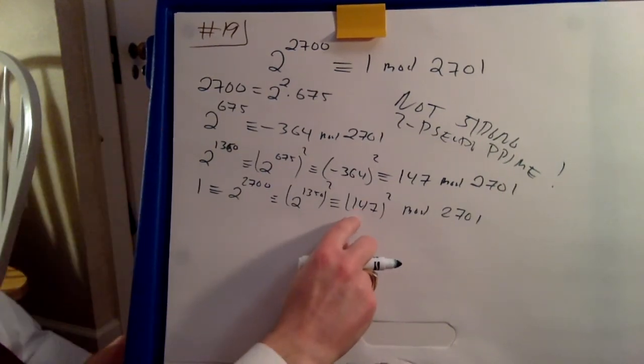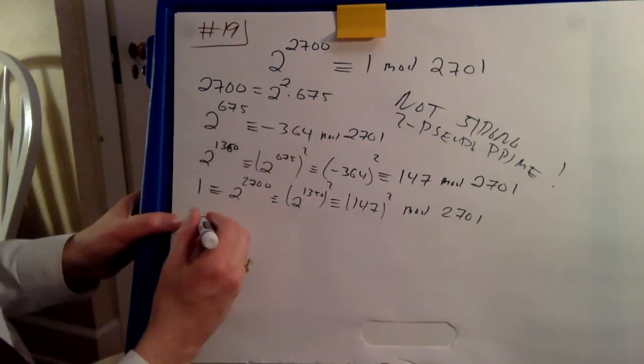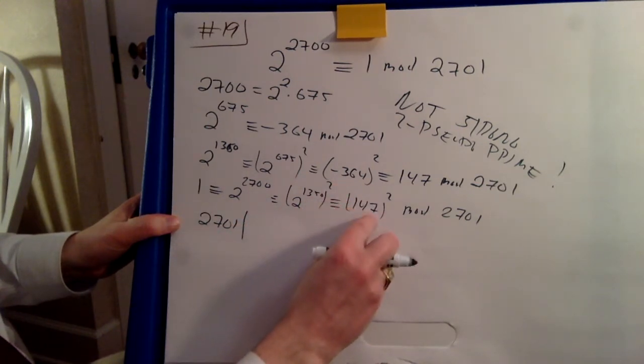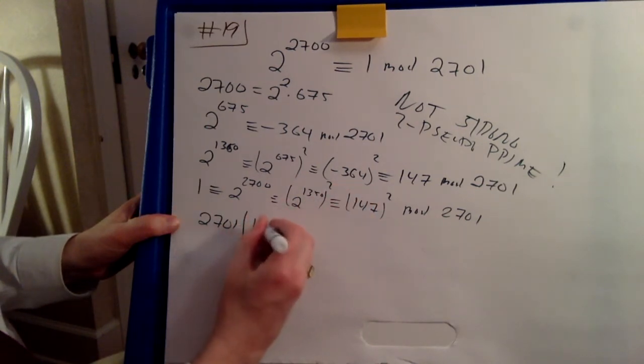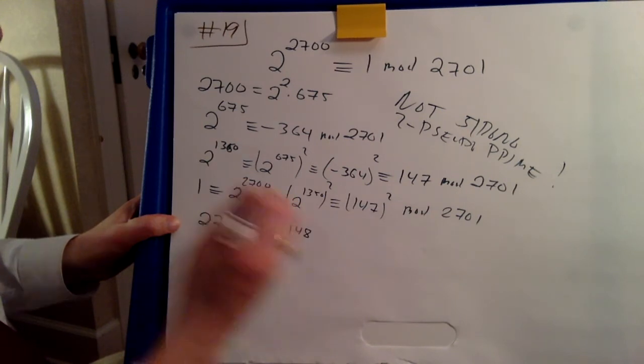So 147 squared minus 1. You know that 2071 divides 147 minus 1 times 148.